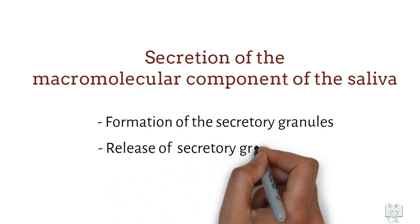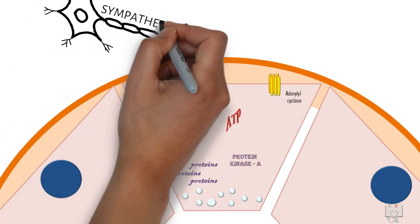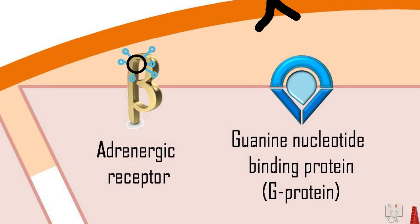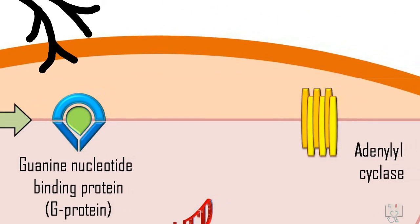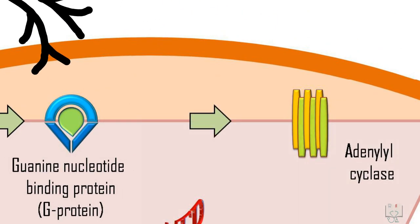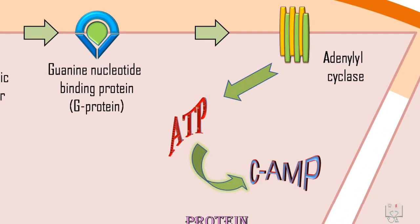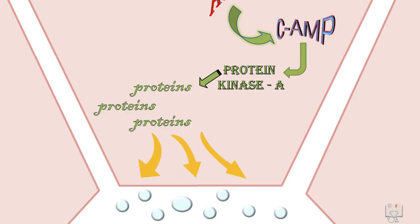In the salivary acini, the autonomic nervous system's sympathetic branch releases the neurotransmitter norepinephrine, which binds to the beta-adrenergic receptor. This receptor activation activates G protein, which in turn stimulates adenyl cyclase. Adenyl cyclase converts ATP into cAMP. cAMP then activates protein kinase A, which phosphorylates various proteins in a cascade that eventually leads to the exocytosis of secretory granules.